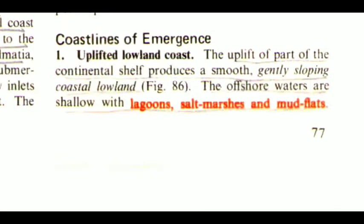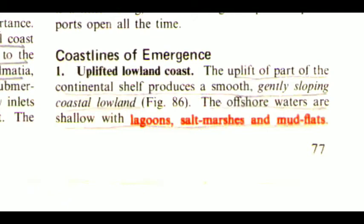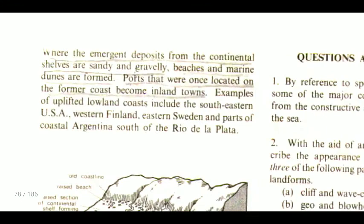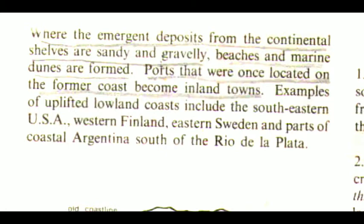Now we are going to read coastlines of emergence. The first one is uplifted lowland coast. The uplift of part of the continental shelf produces a smooth, gently sloping coastal lowland. The offshore waters are shallow with lagoons, salt marshes and mud flats where the emergent deposits from the continental shelves are sandy and gravelly. Beaches and marine dunes are formed. Ports that were once located on the former coast become inland towns. Examples of uplifted lowland coasts include the southeastern USA, western Finland, eastern Sweden and parts of coastal Argentina south of the Río de la Plata.